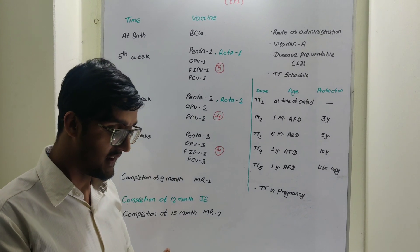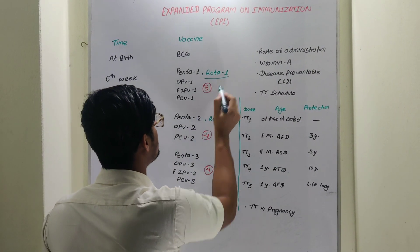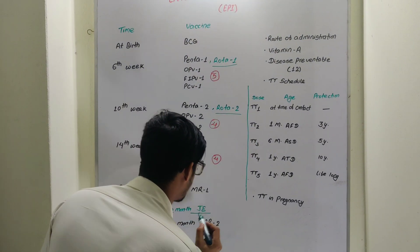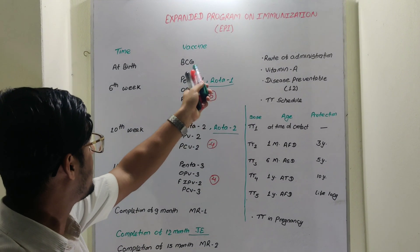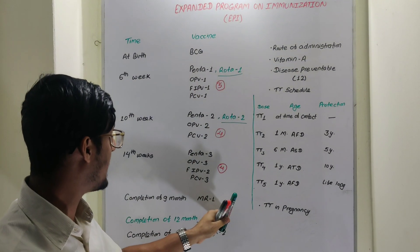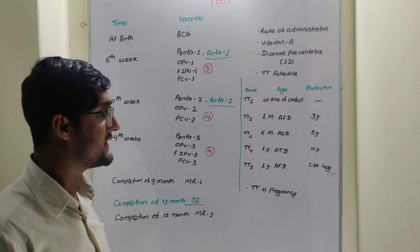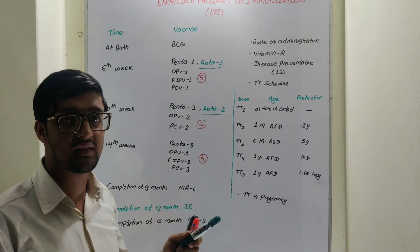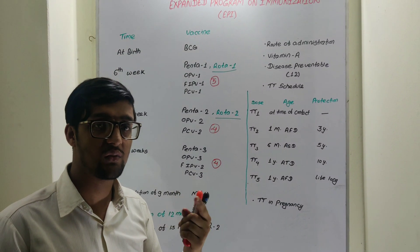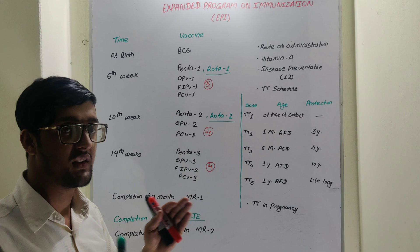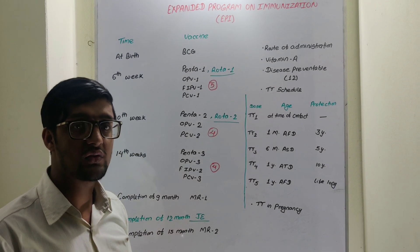Now let's discuss country-wise differences. This universal EPI schedule applies broadly. For Bangladesh, Rota vaccine and Japanese Encephalitis vaccine are not included. The schedule including Rota and Japanese Encephalitis is commonly used in Nepal and India. In the case of Pakistan, they add one extra vaccine — Typhoid vaccine — given after two years of age.